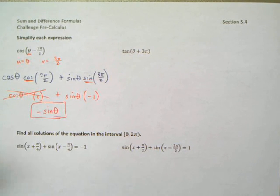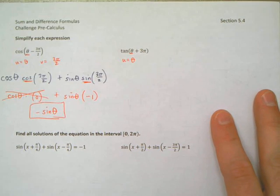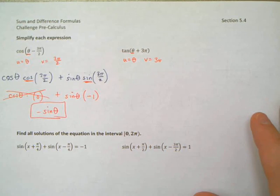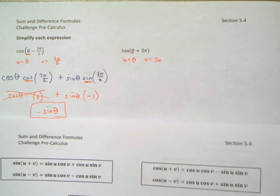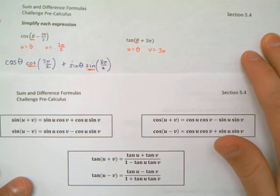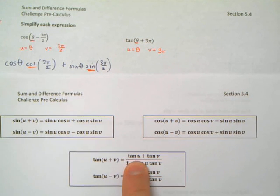Over here, tangent of θ plus 3π, same idea. We're going to identify then u as θ and v as 3π. So, once we do that, then we come over here to our formula sheet, which of course you need to have memorized at some point in time. Have I said that enough? Get that point across? We're doing tangent of u plus v, which means it's this formula. So, it looks like I'm going to start off by doing, the top formula here is going to be tangent u, which is tangent θ,